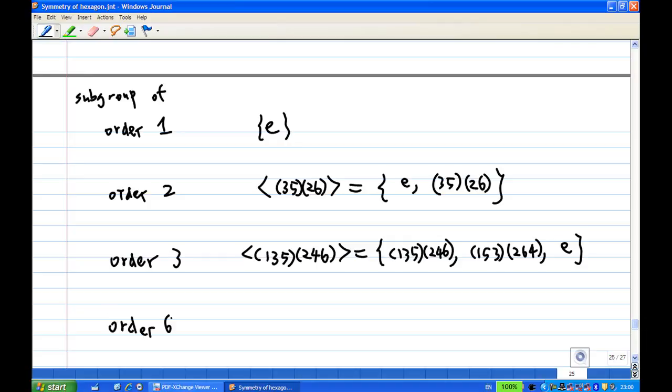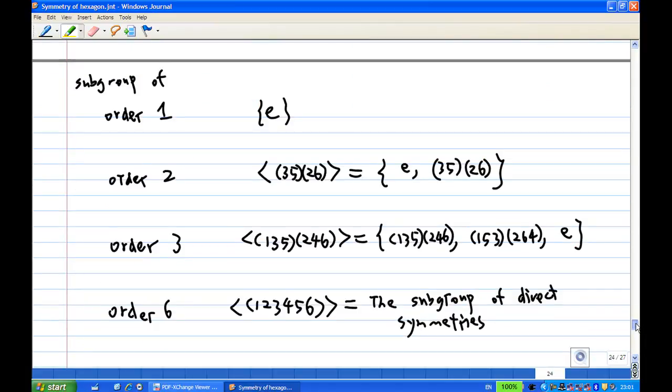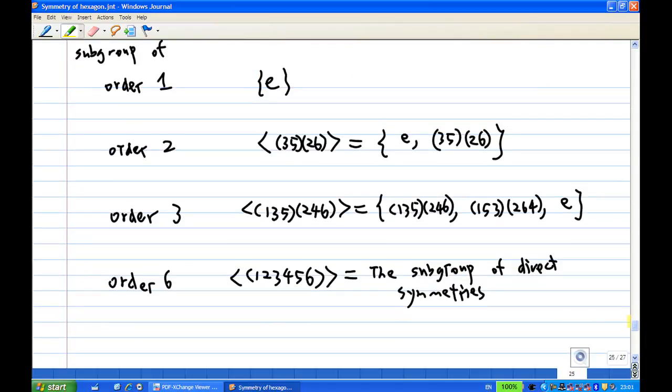Order 6 consists of the subgroup generated by (1,2,3,4,5,6), which consists of the subgroup of direct symmetries. There are 6 of them, as you can see from all the direct symmetries. So I have listed out all the possible subgroups of order 1, 2, 3, and 6.